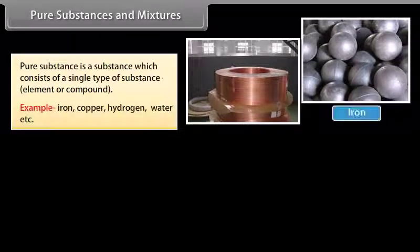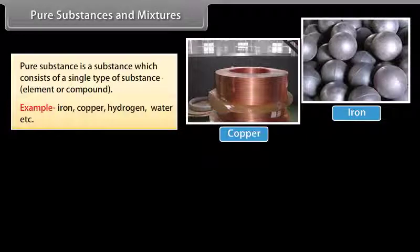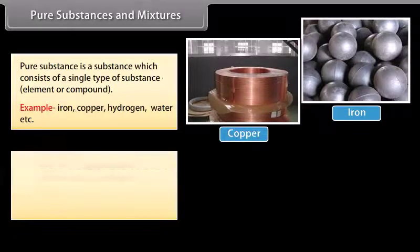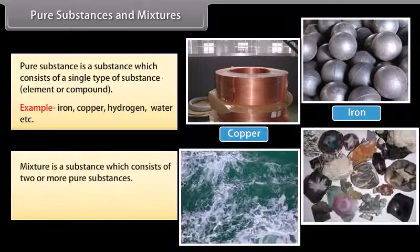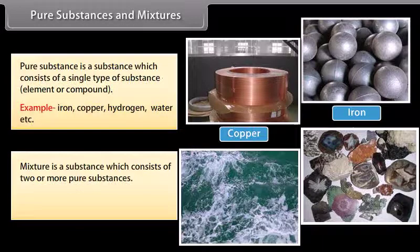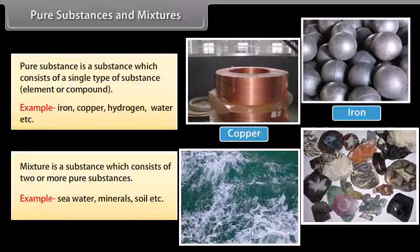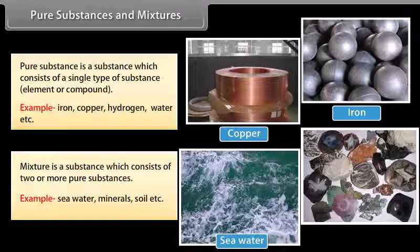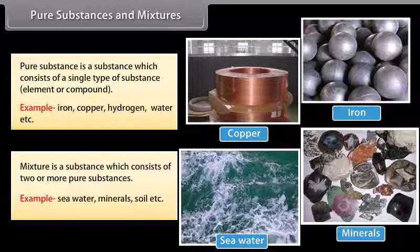Examples of pure substances include iron, copper, hydrogen, water, etc. A mixture is a substance which consists of two or more pure substances. Examples of mixtures include sea water, minerals, soil, etc.